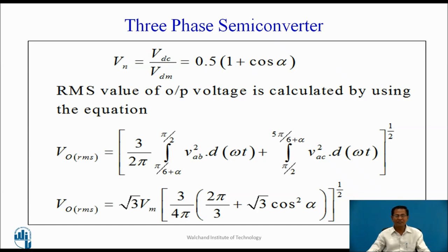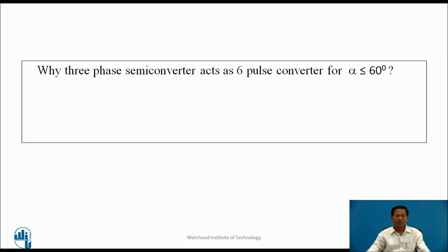The RMS value of output voltage is calculated using: V0_rms = √[(3/2π)(∫(π/6+α to π/2) Vab² d(ωt) + ∫(π/2 to 5π/6+α) Vac² d(ωt))]. After solving, we obtain V0_rms = √3 Vm × [3/4π × (2π/3 + √3 cos²α)]^(1/2). The three-phase semi-converter acts as a 6-pulse converter for α ≤ 60 degrees.